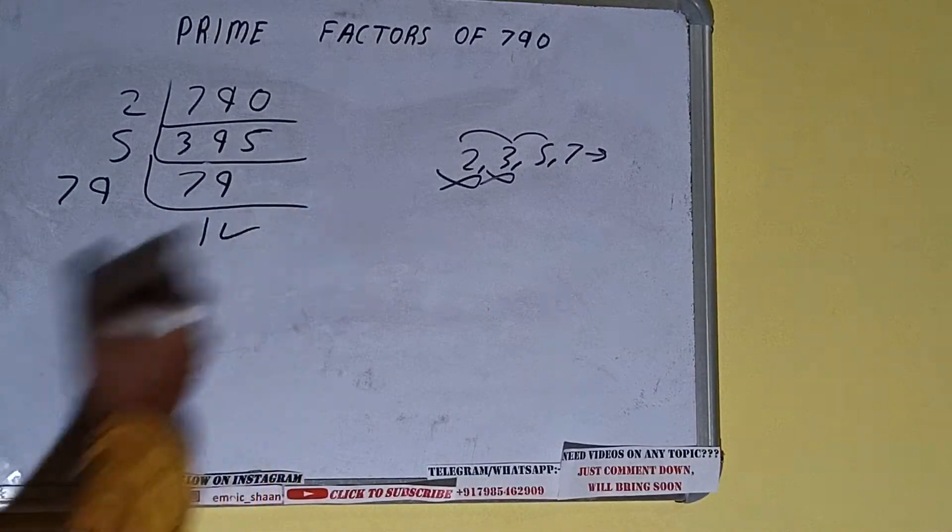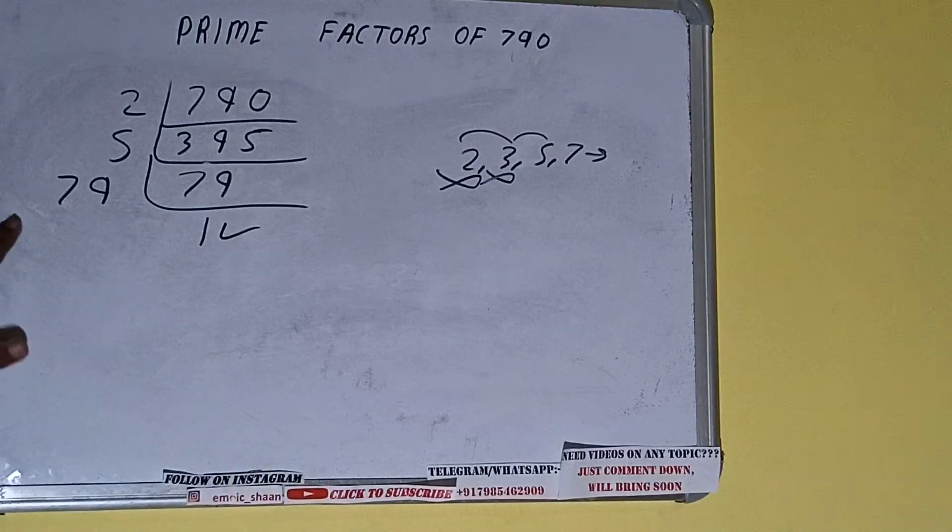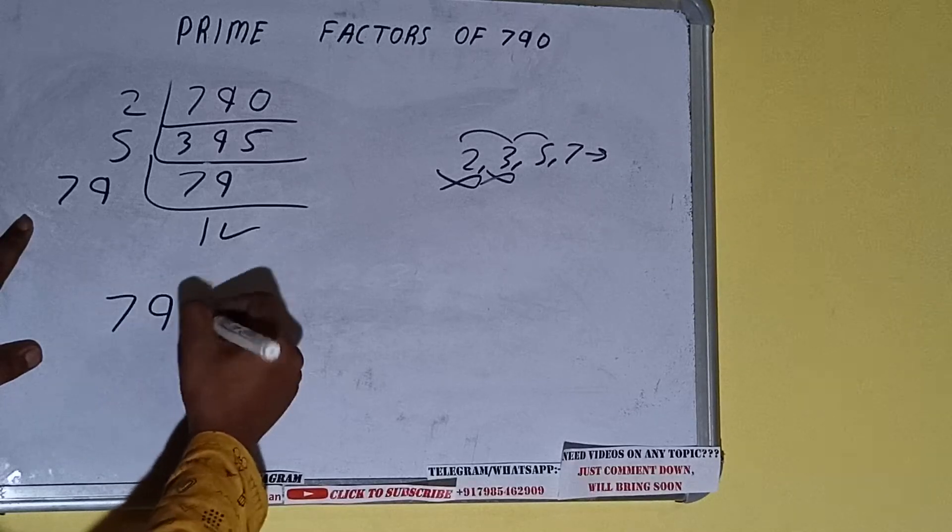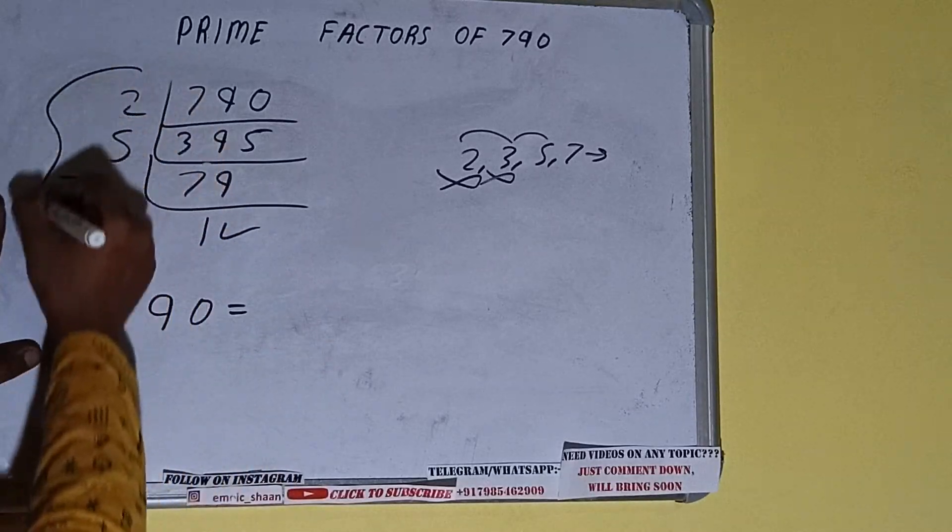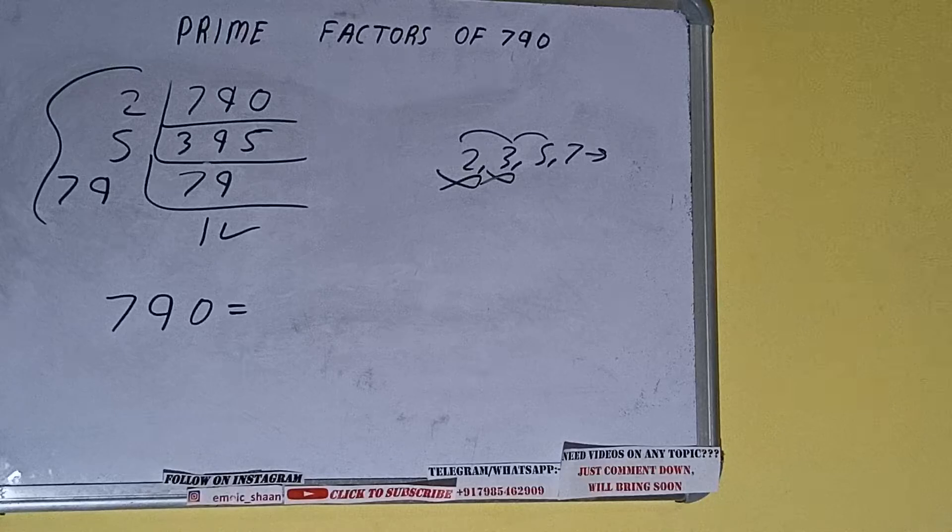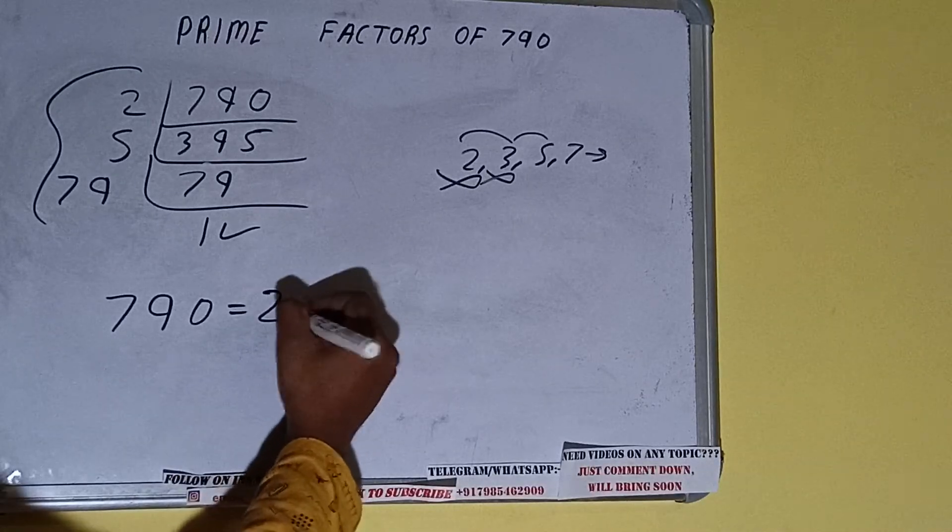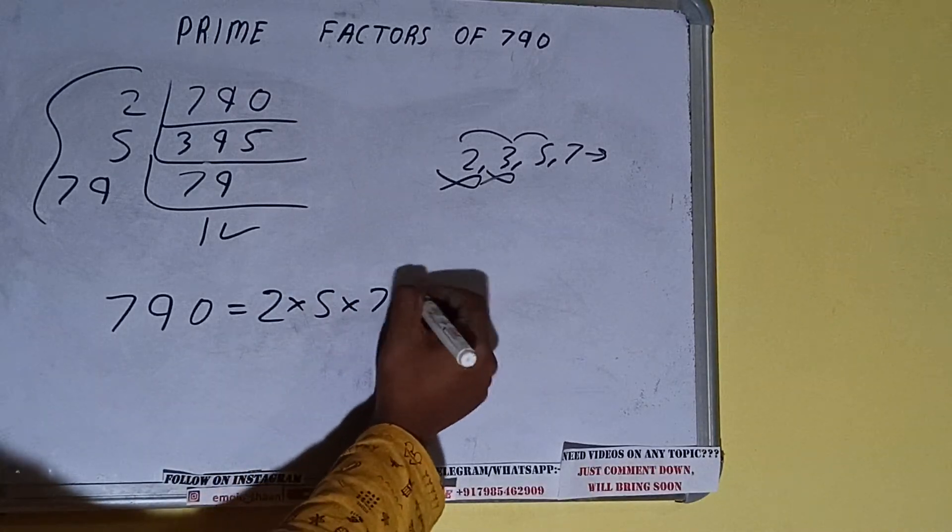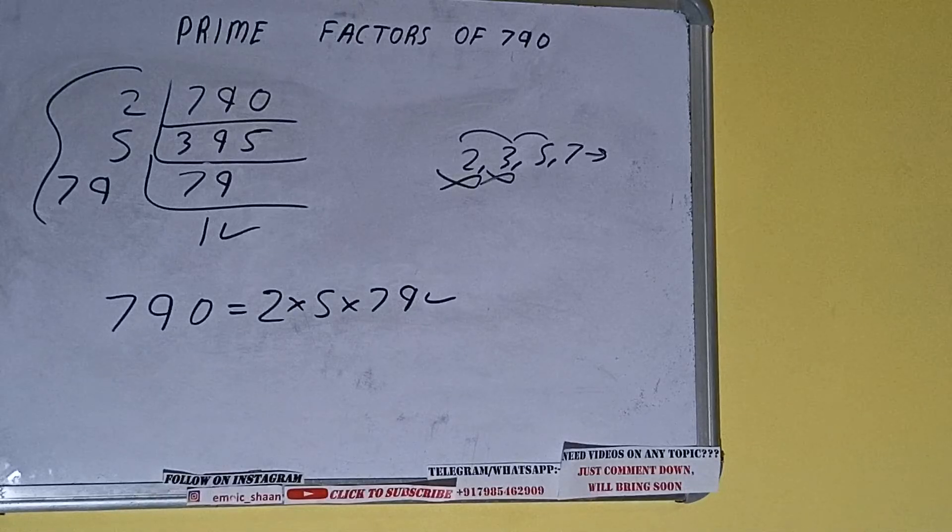Once we get 1, we need to stop and do one last thing, that is, prime factors of 790 equals multiply whatever we have on the left-hand side. That is 2 times 5 times 79. That will be the answer. So this is all about prime factors of 790.